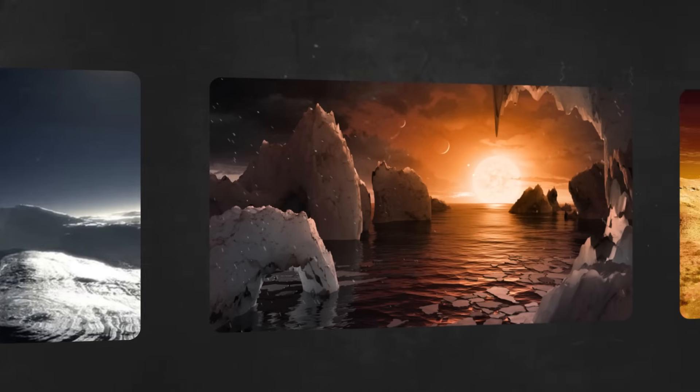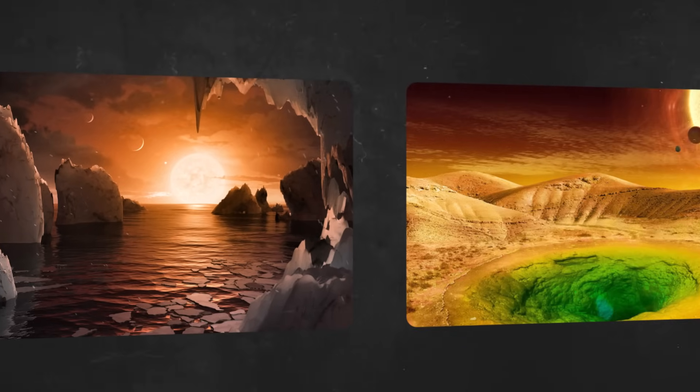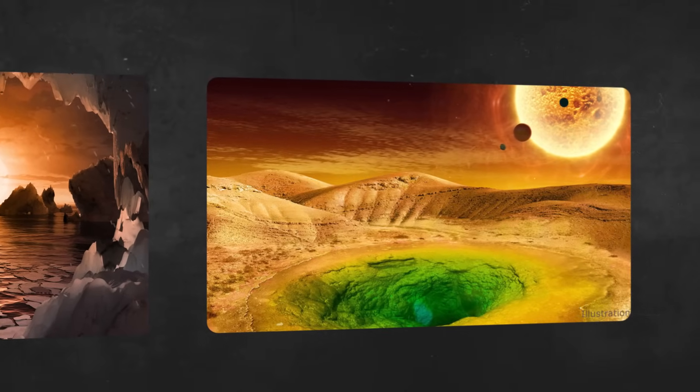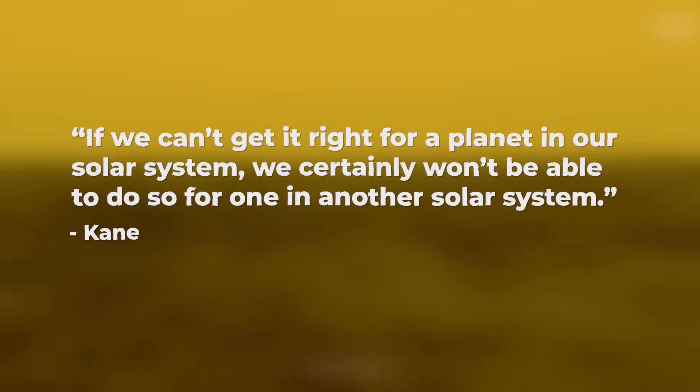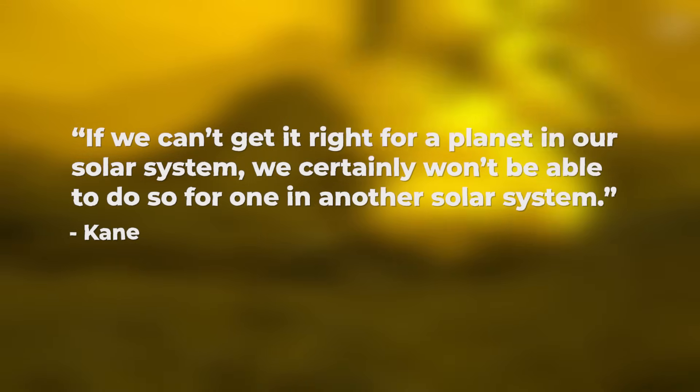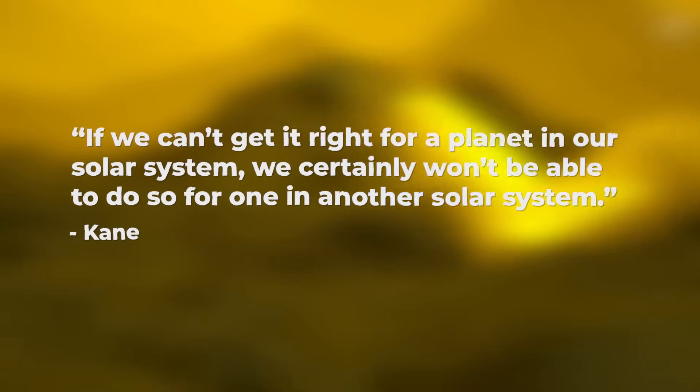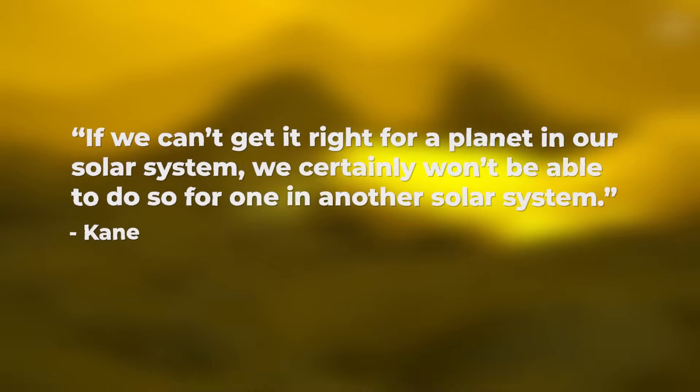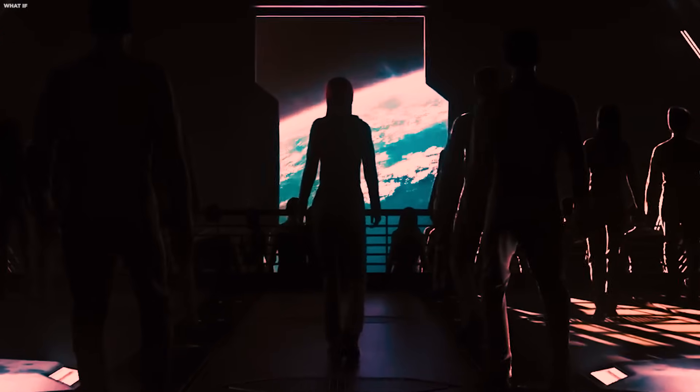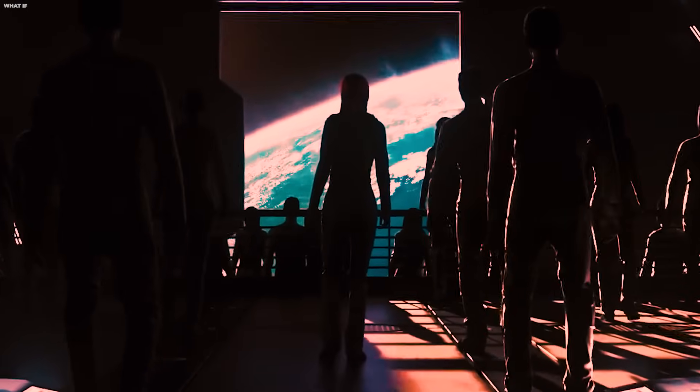Because it is an inference, we're not going there, we're not landing on the surface of an exoplanet. The inference comes from a model. This model is developed using information from our own solar system. If we can't get it right for a planet in our solar system, we certainly won't be able to do so for one in another solar system.